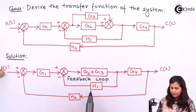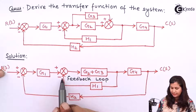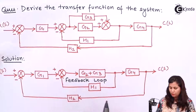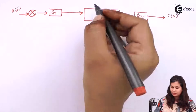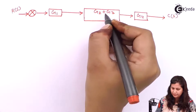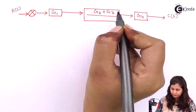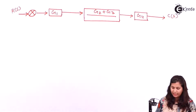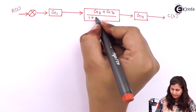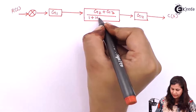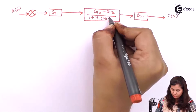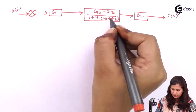Minus sign is there because H1 is having a minus sign here, so it is a negative feedback loop. The transfer function will have a minus sign, so we will get a plus sign here, and then we will have 1 plus H1 times G2 plus G3.